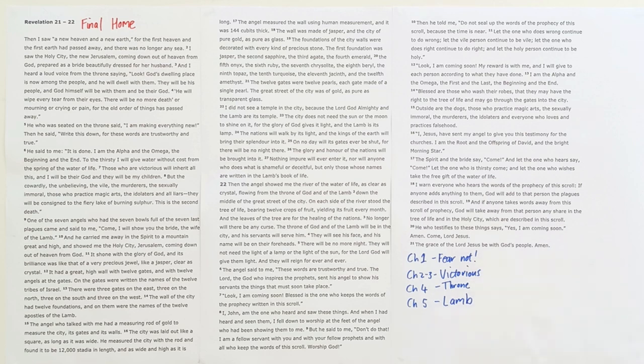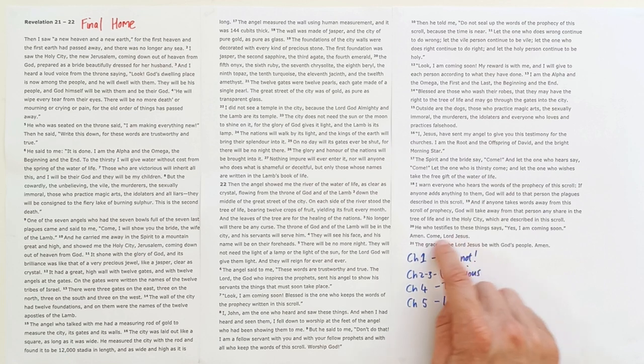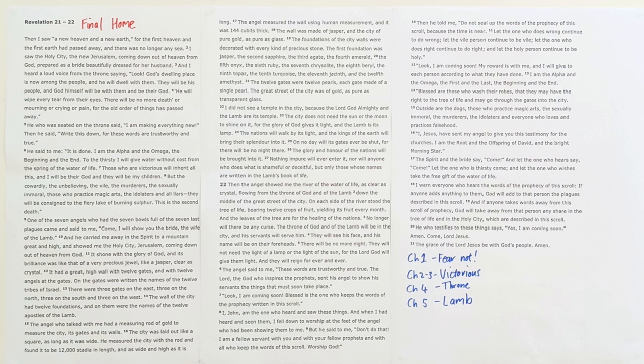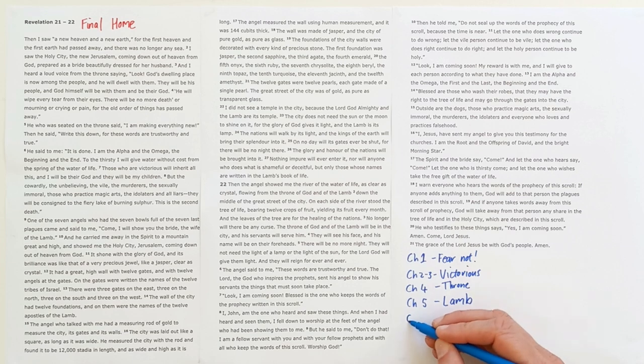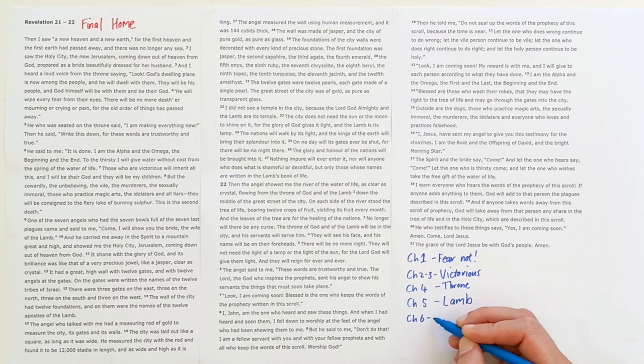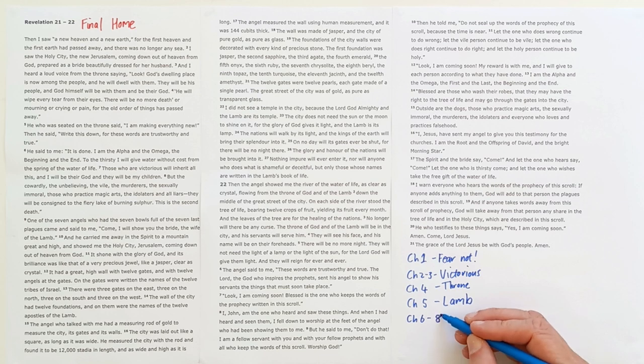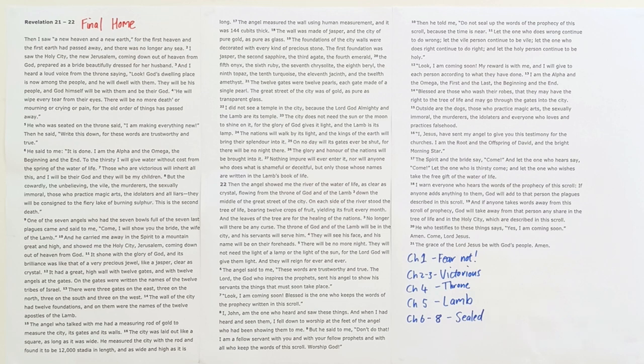He urged his church to make it to the end victorious. He is the Lamb of God who is worthy to open the scroll because he was slain and with his blood he purchased people for God. From this foundation we saw that scroll of judgment being opened by the Lamb in chapters six to eight, and we saw those who were sealed by the blood of the Lamb in chapter seven.